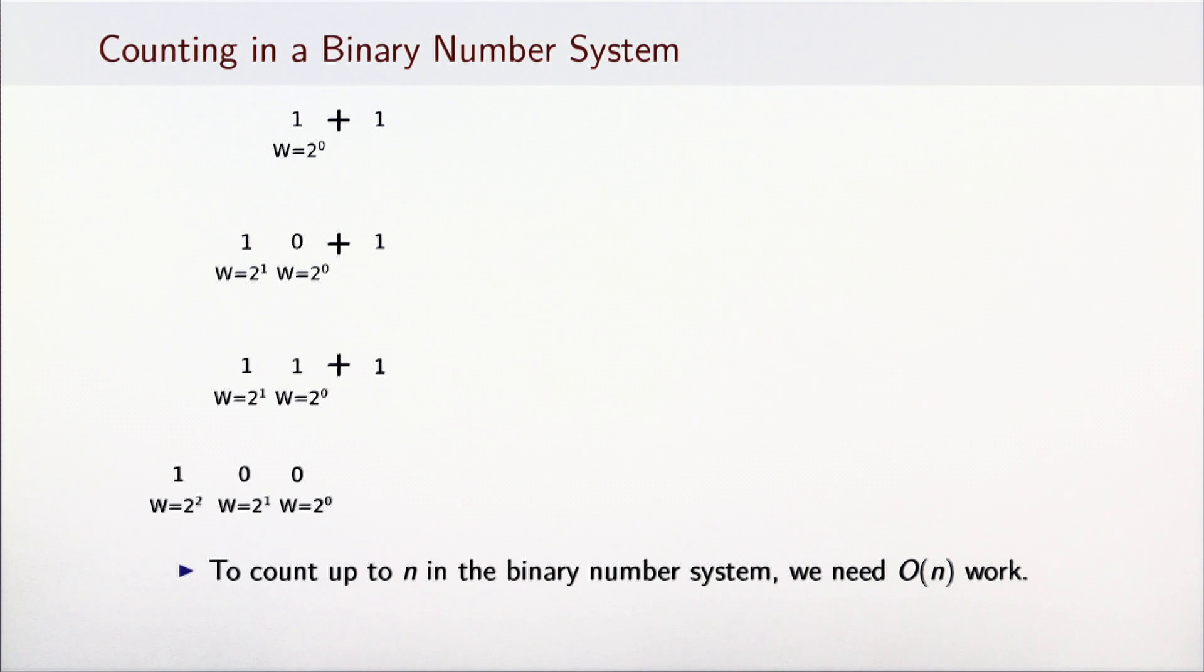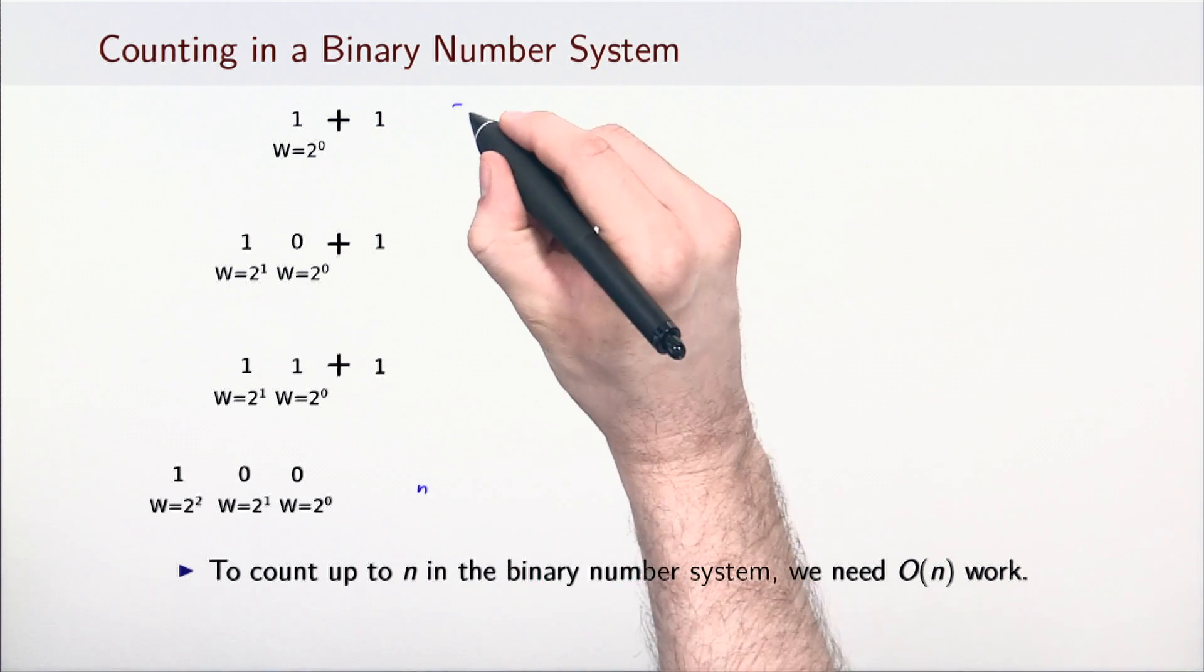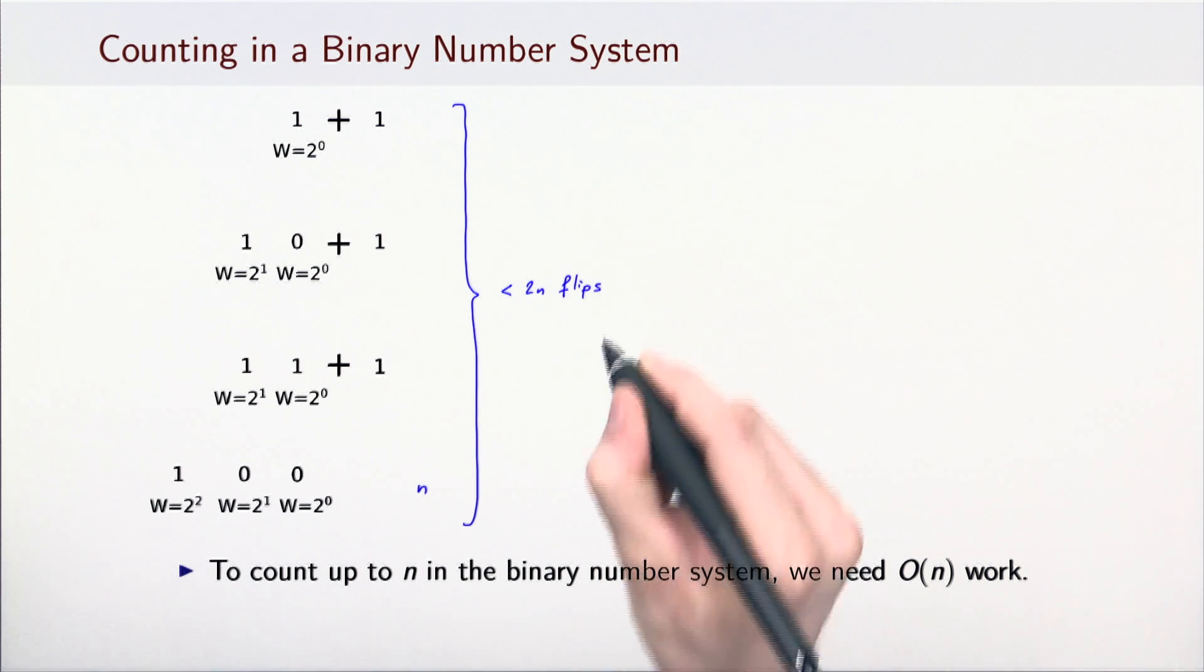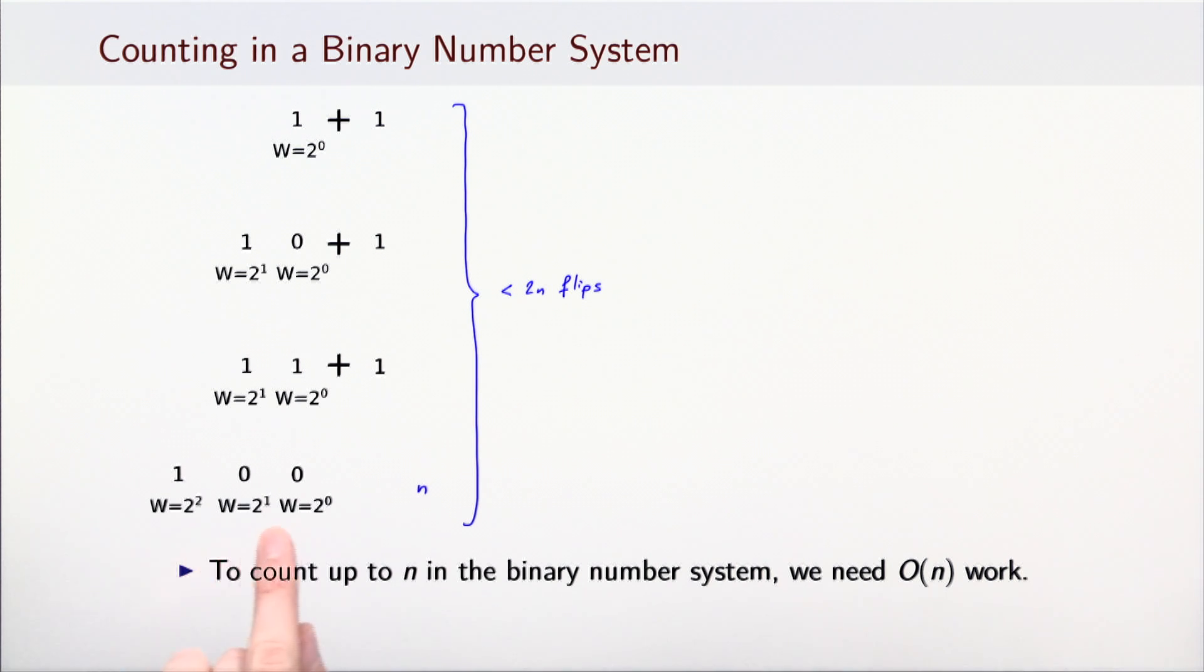The binary number system has two important properties. First, to count up to n in the binary number system, we will have to do O(n) amount of work. If we count the number of digits we flipped to get to n, we will see that it is less than 2 times n. In the previous example, it is not incidental that we flipped exactly 7 digits to get to the number 4. The second property is that a number n requires O(log n) digits. If this were not the case, it would be really hard to write big numbers.